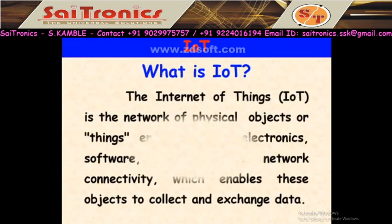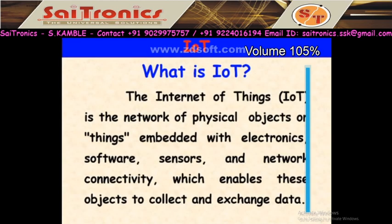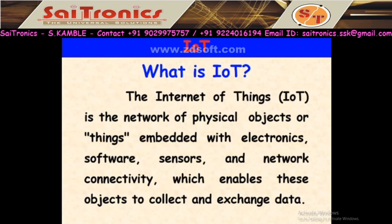IoT means Internet of Things. It is the network of physical objects embedded with electronics, software, sensors, and network connectivity, which enables these objects to collect and exchange data. All physical devices are connected to each other through the internet, and they can transmit and collect data between each other.